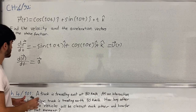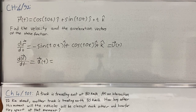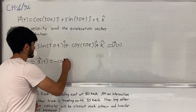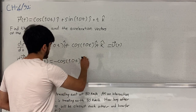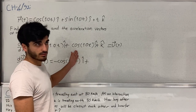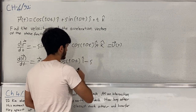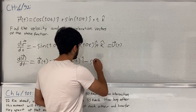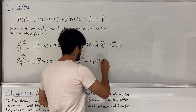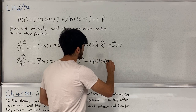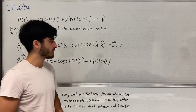The acceleration vector: taking the derivative of minus sine gives minus cosine, with the same coefficient and i-hat. Then taking the derivative of cosine gives minus sine, so the plus and minus signs combine to give minus sine(t) j-hat. The derivative of the constant k-hat term is zero, so there is no k-hat component in the acceleration vector.